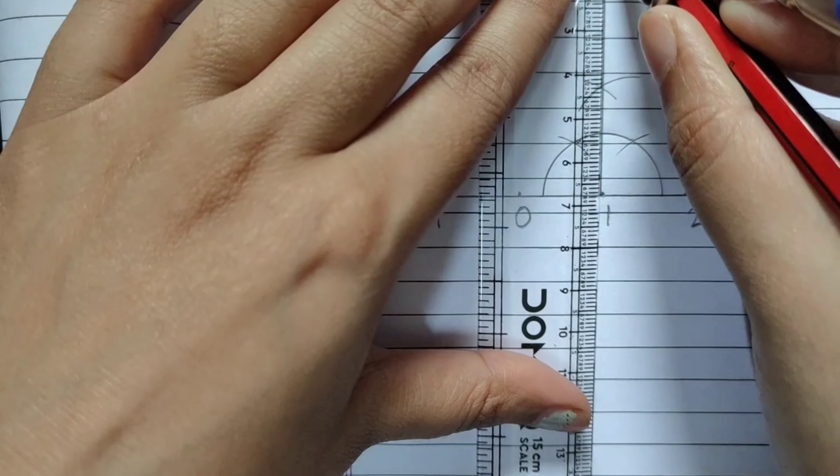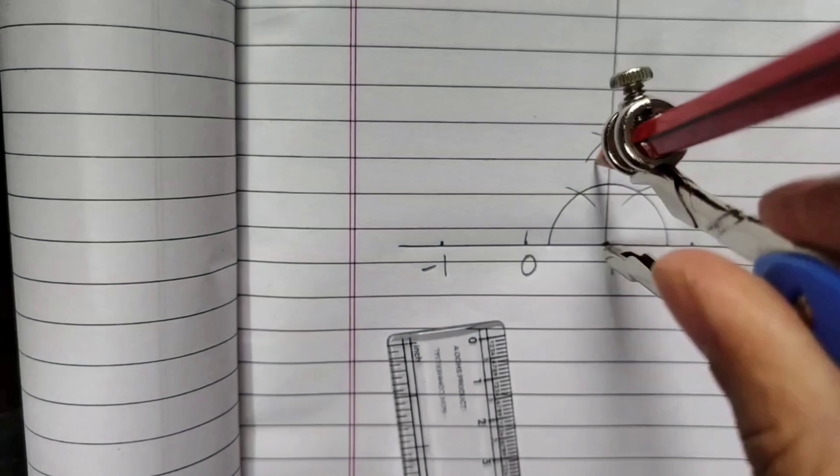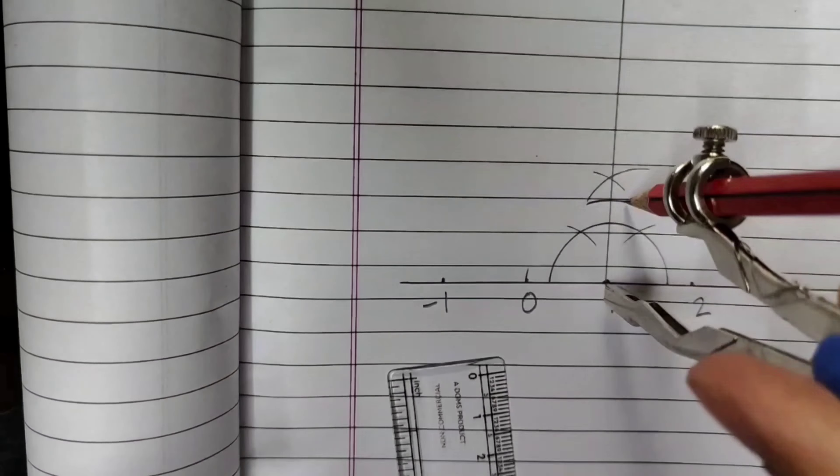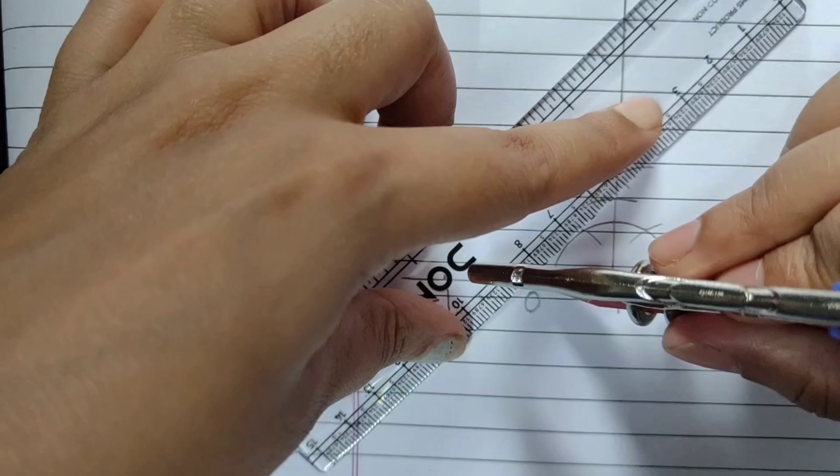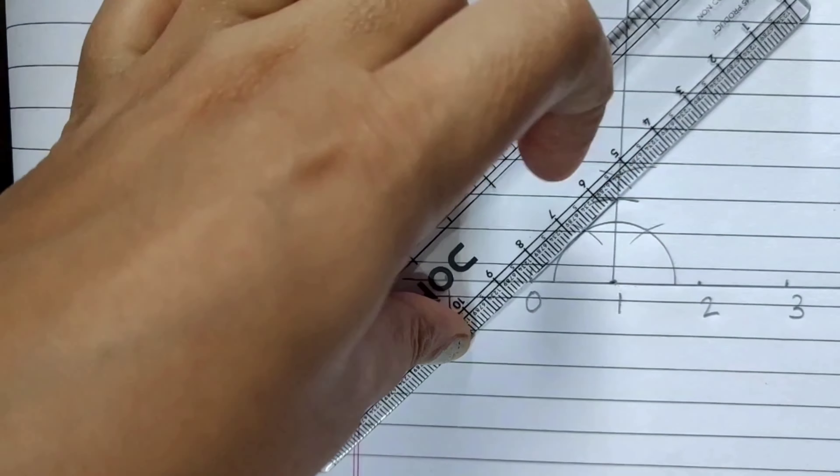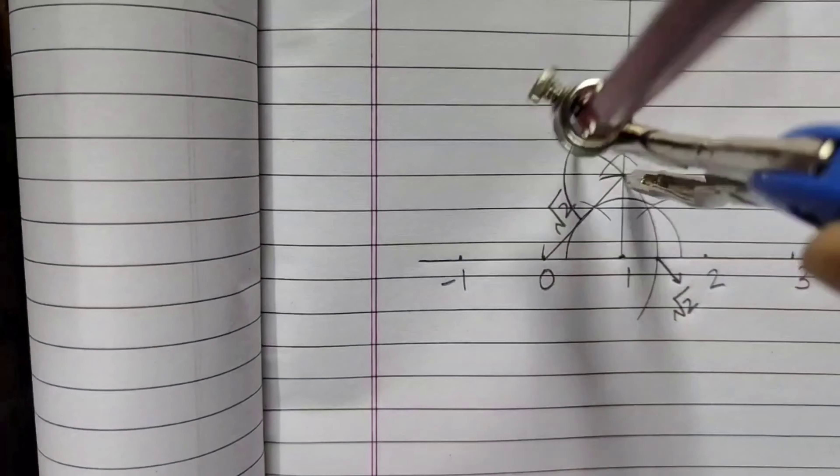We have to draw a perpendicular from 1. As you can see, after that, we have taken a measurement of 1 to 1, which I have taken as 2-1 unit. We have to make it as much as perpendicular. So this will be your root 2.